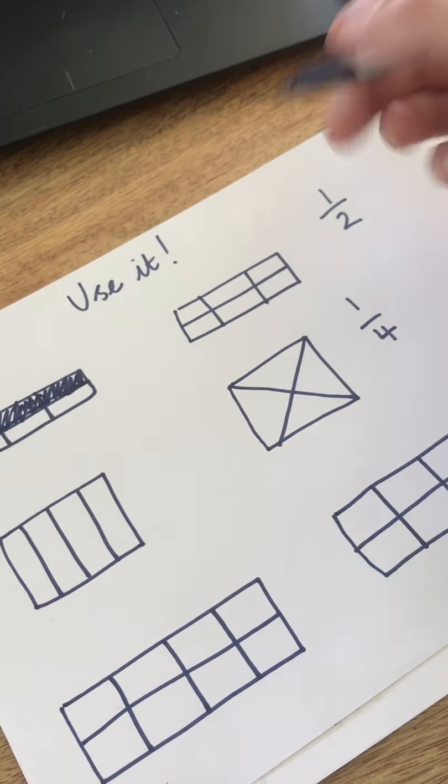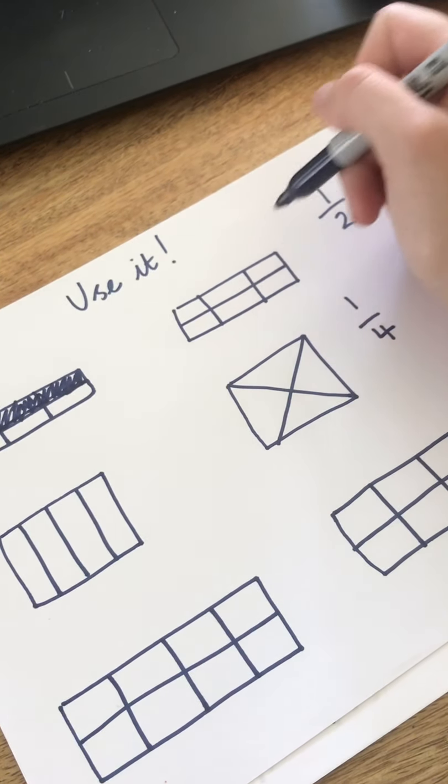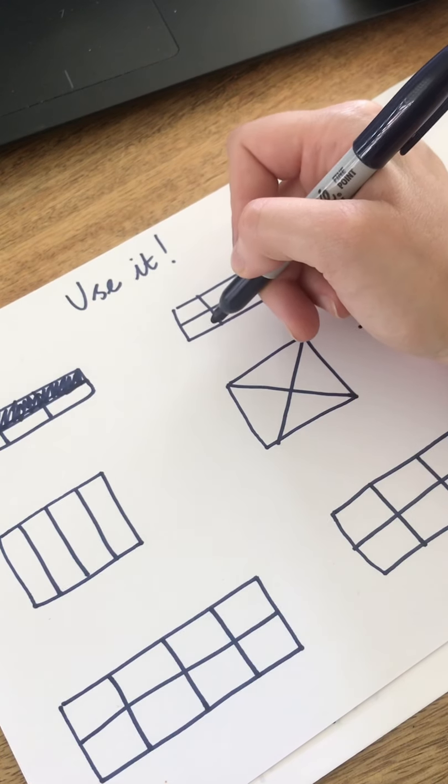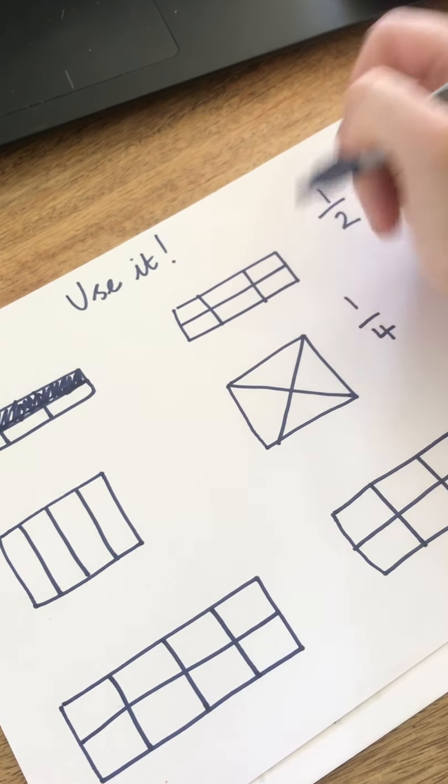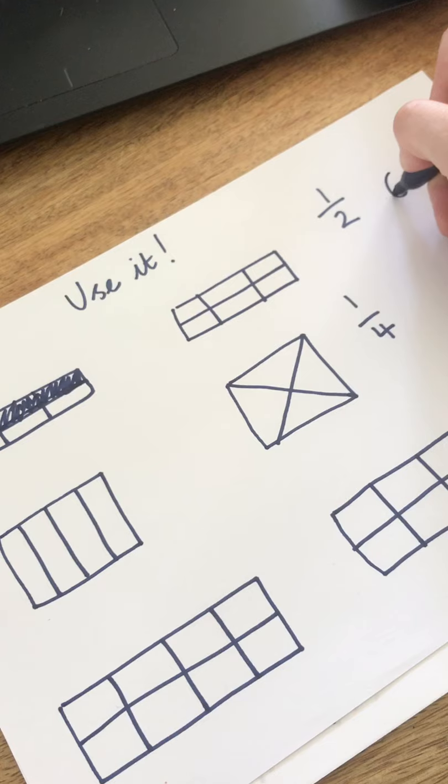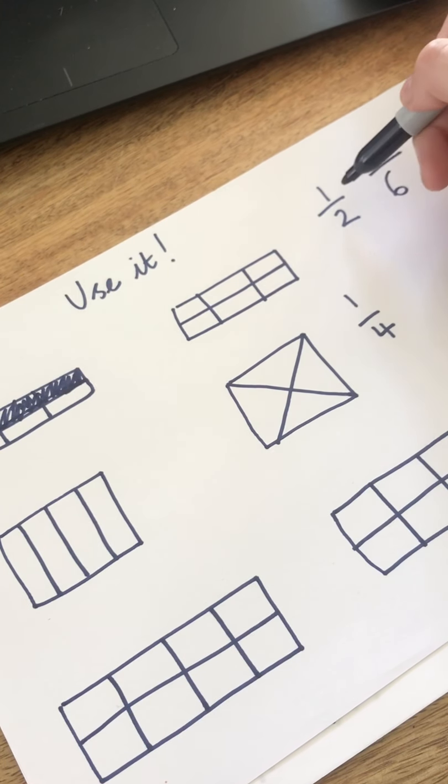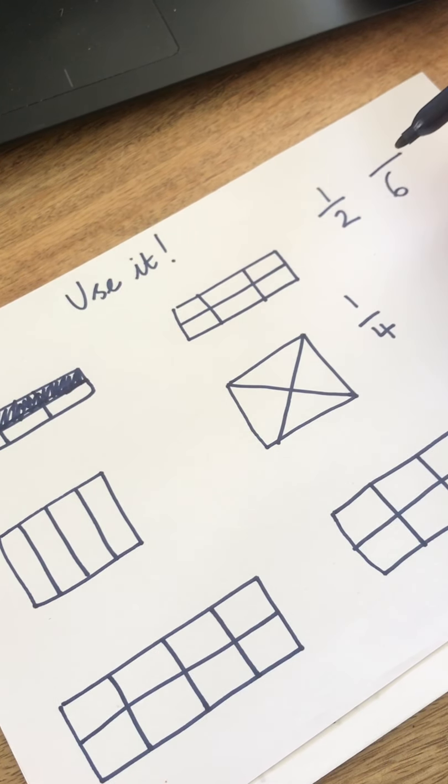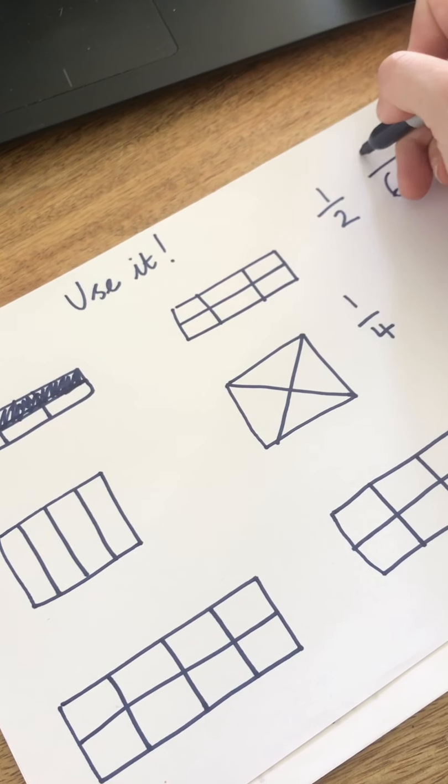Another way of doing it is to count up how many parts there are. We just said there's one, two, three, four, five, six, there's six parts that make the whole. And I need to colour in half of those. Now if you know your halves, you know that half of six is three.